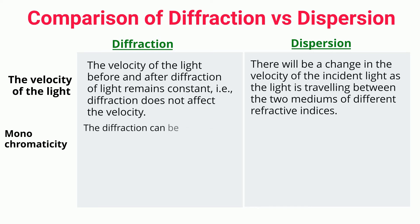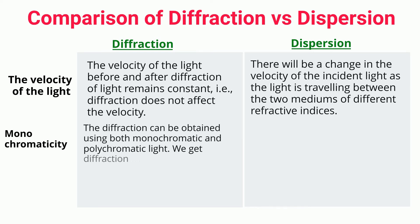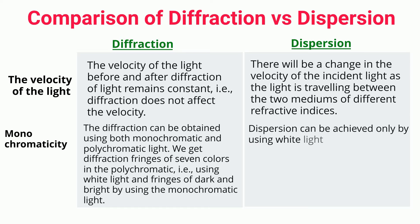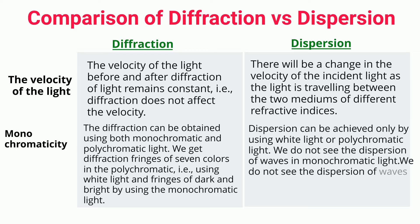Monochromaticity: Diffraction can be obtained using both monochromatic and polychromatic light. We get diffraction fringes of seven colors in polychromatic (white) light, and fringes of dark and bright using monochromatic light. Dispersion can be achieved only by using white light or polychromatic light; we do not see dispersion of waves in monochromatic light.